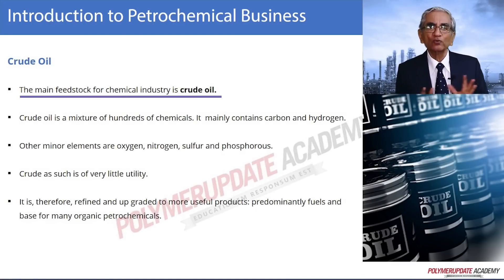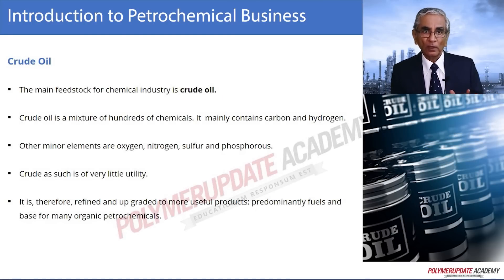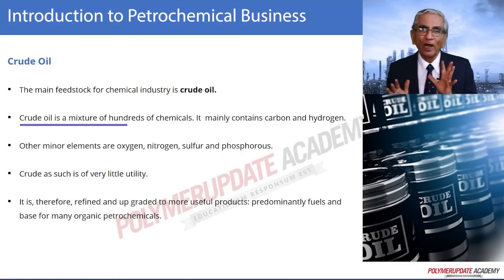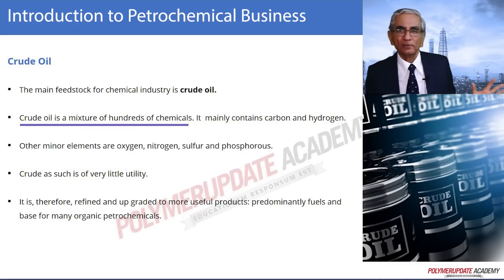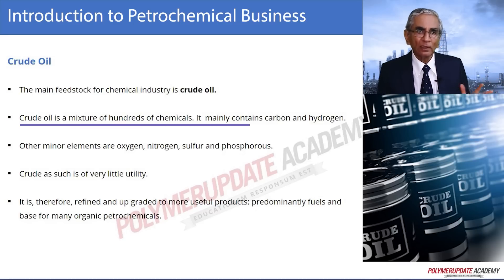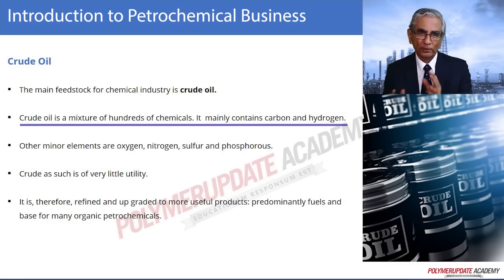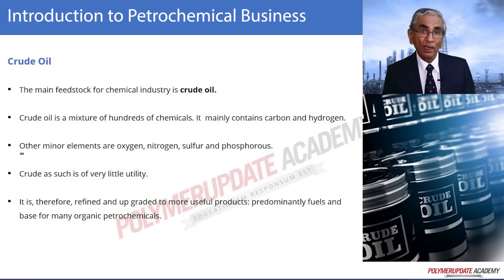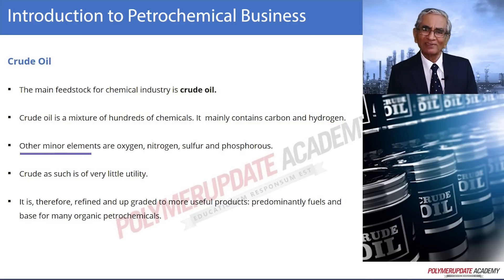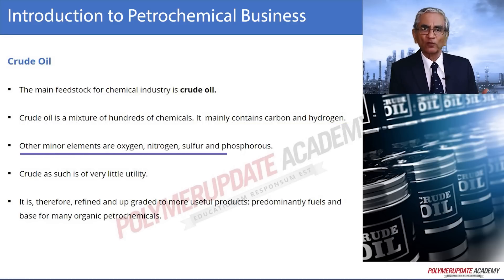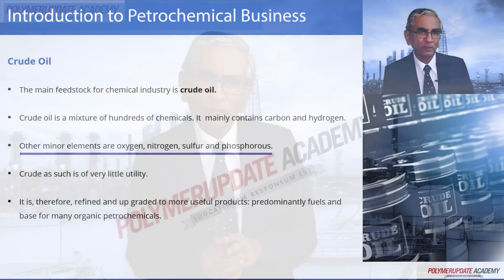The main feedstock today globally for the chemical industry is crude oil. Crude oil is a mixture of hundreds of chemicals, mainly made up of carbon and hydrogen. Other minor elements like oxygen, nitrogen, sulfur, and phosphorus may also be present.